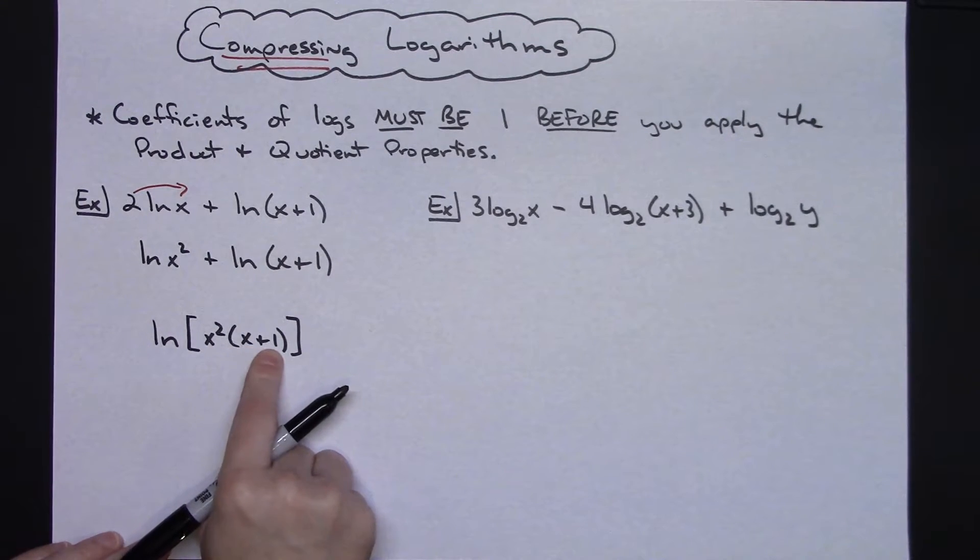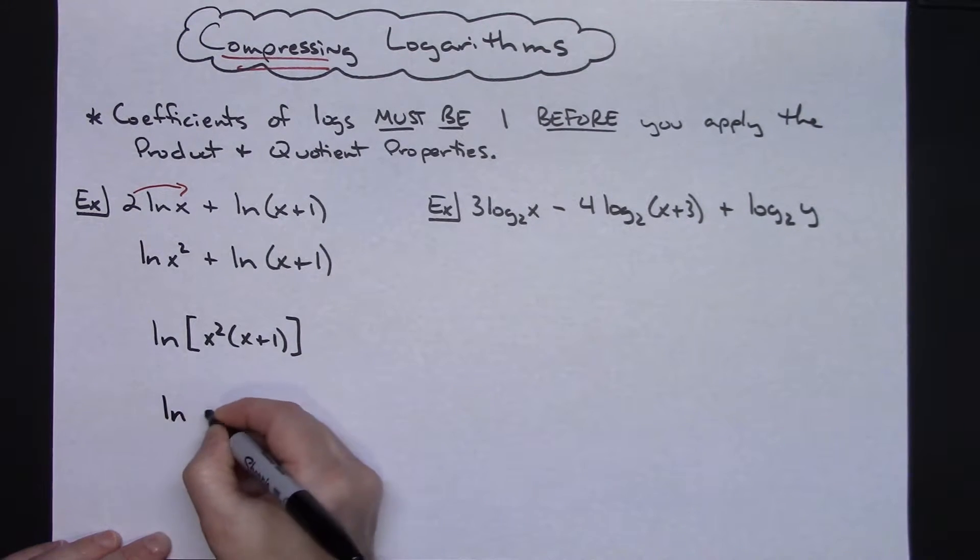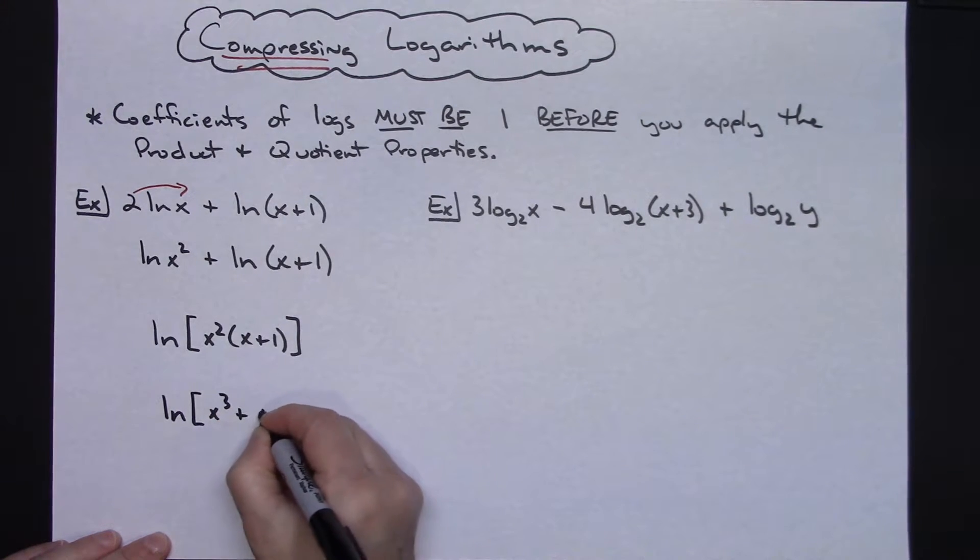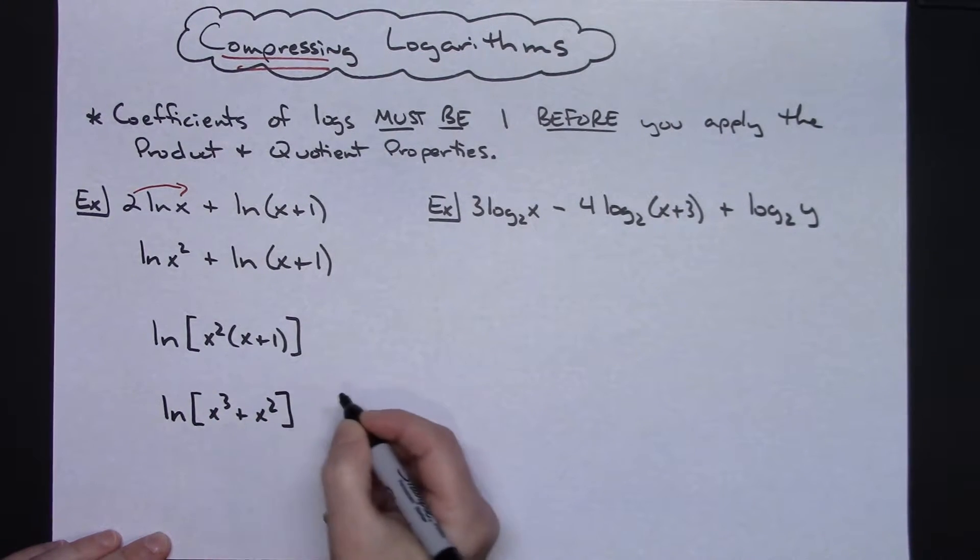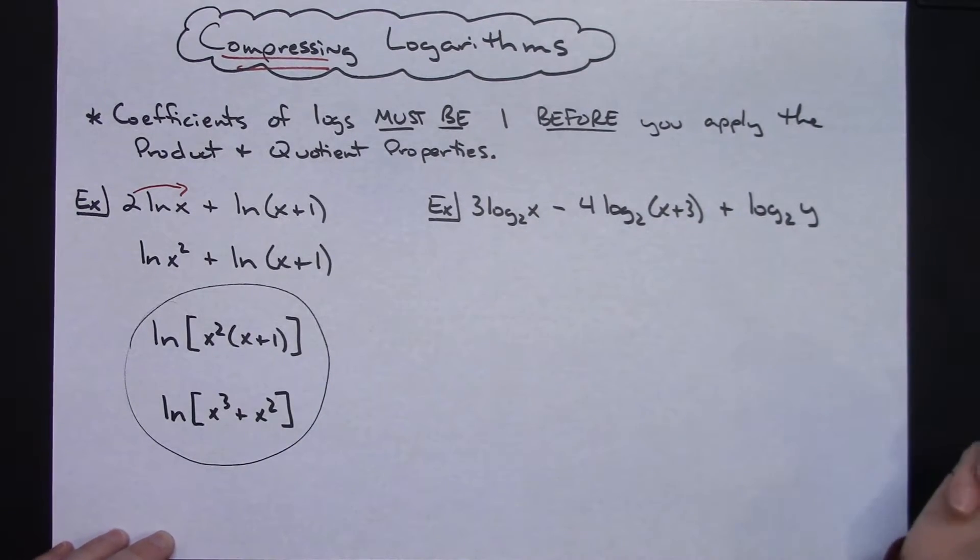You could probably stop there but if you want to go ahead and do a little bit of simplifying inside there you could do that as well. So natural log of maybe say x to the third plus x squared. Usually I allow my students to stop with that first answer right there, but if you need to simplify or you were required to simplify your answer on the inside you could do that as well.